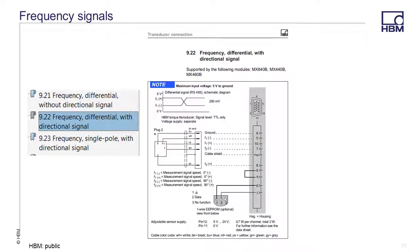The second wiring configuration is for a differential frequency signal with a directional signal. This is the speed signal output for many HBM torque sensors.